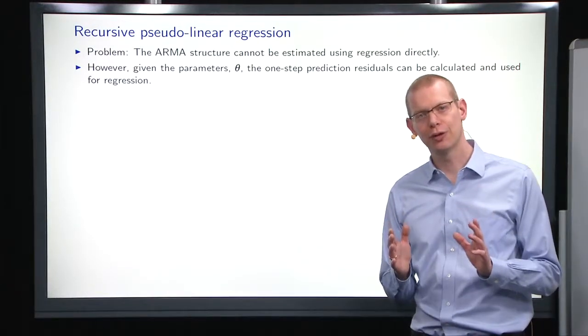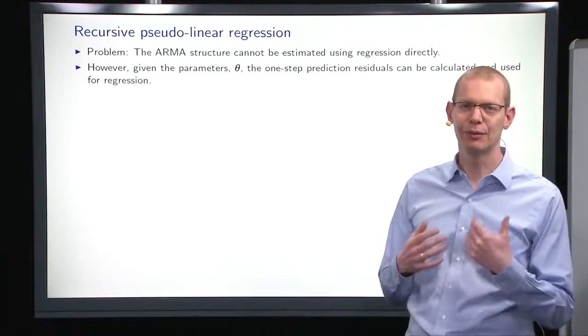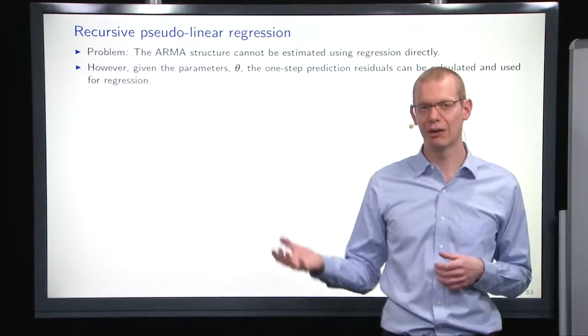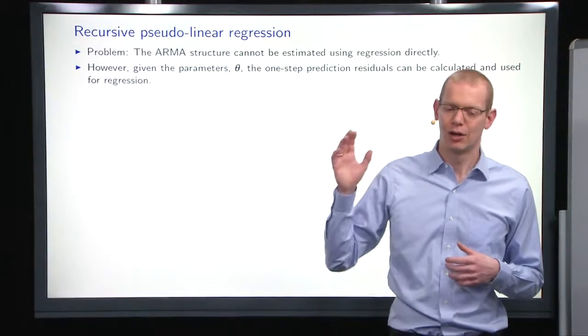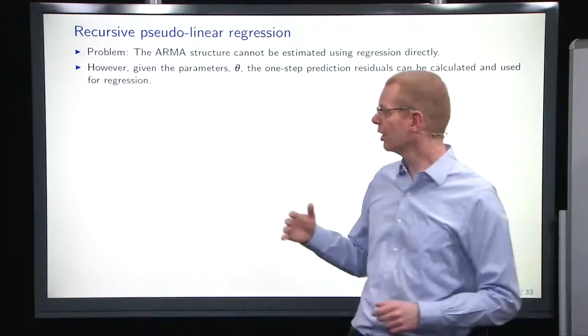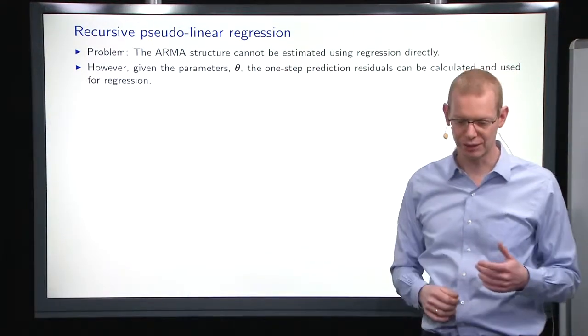Now, what we looked at so far is when we know everything and all the x's in our model are known. Now, in reality, we also like the moving average part. The auto-regressive part is often easy to handle, but we cannot use the moving average part. We cannot do it with regression directly.